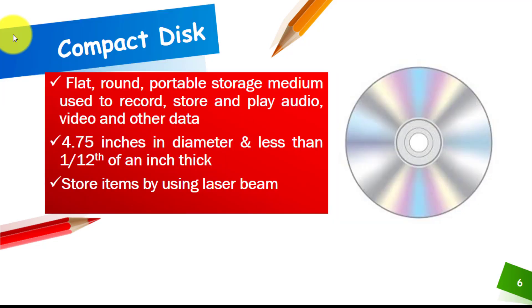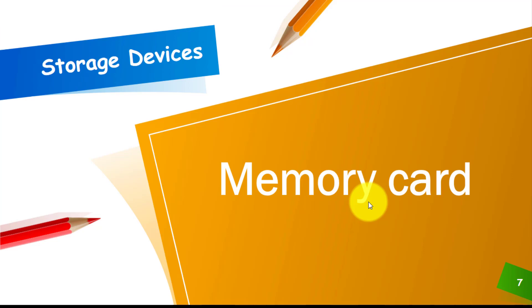The next storage device is the compact disk, or CD. A CD is a flat, round, and portable storage medium used to record, store, and play audio, video, or any other data. It is 4.75 inches in diameter and less than 1/12 of an inch thick. CDs store items by using a laser beam, so the laser beam plays an important role in storing different data on the CD.